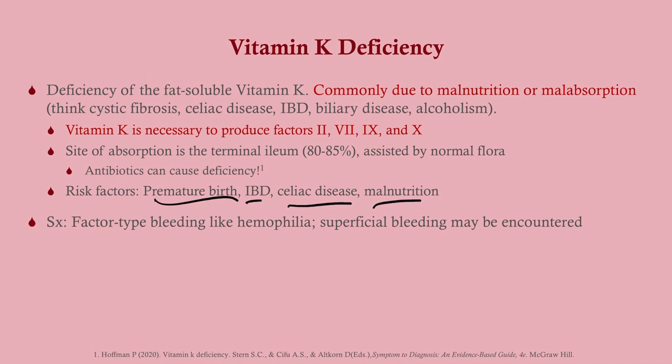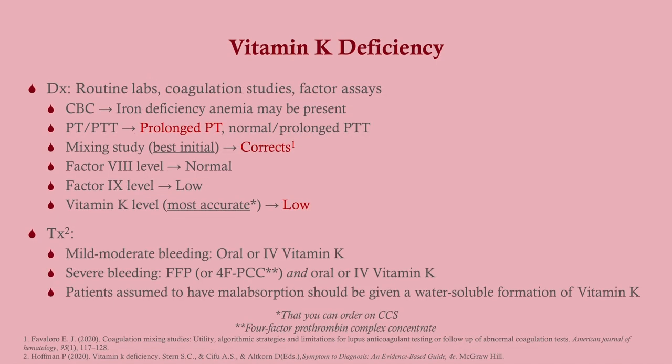Symptoms include factor-type bleeding similar to hemophilia, but you can also have some superficial bleeding as well. For diagnosis, get routine labs and coagulation studies: CBC, PT, PTT, a mixing study to differentiate from hemophilia, factor 8 and factor 9 levels, and a vitamin K level — the vitamin K level is the most accurate test. On CBC, you may see iron deficiency anemia due to bleeding.